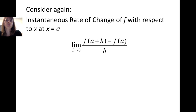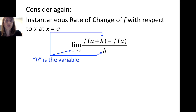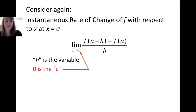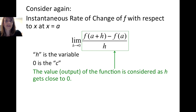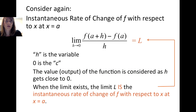Returning to the instantaneous rate of change of f with respect to x at x equals a: this is the limit of f evaluated at a plus h minus f evaluated at a, divided by h, as h approaches 0. Here h is the variable, and 0 is the c value. The function is the difference quotient, and we're interested in what happens to that output as h gets close to 0. When we get a value for this limit, that value is the instantaneous rate of change of f with respect to x at x equals a.